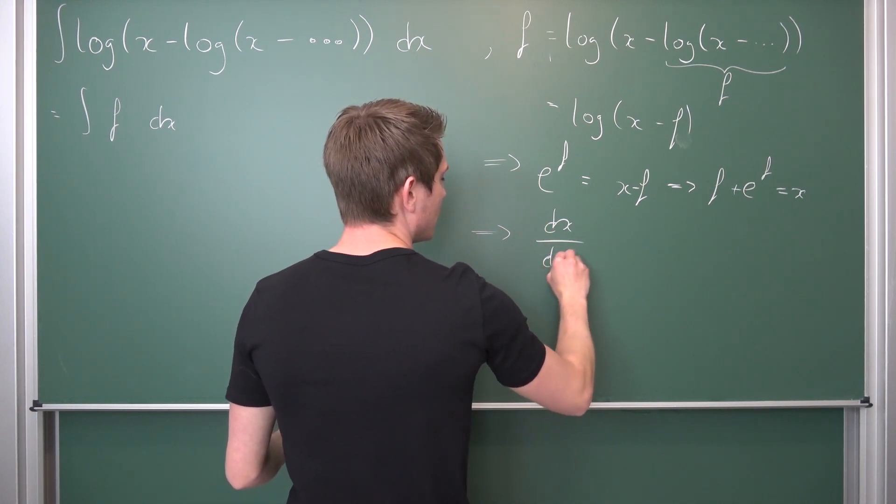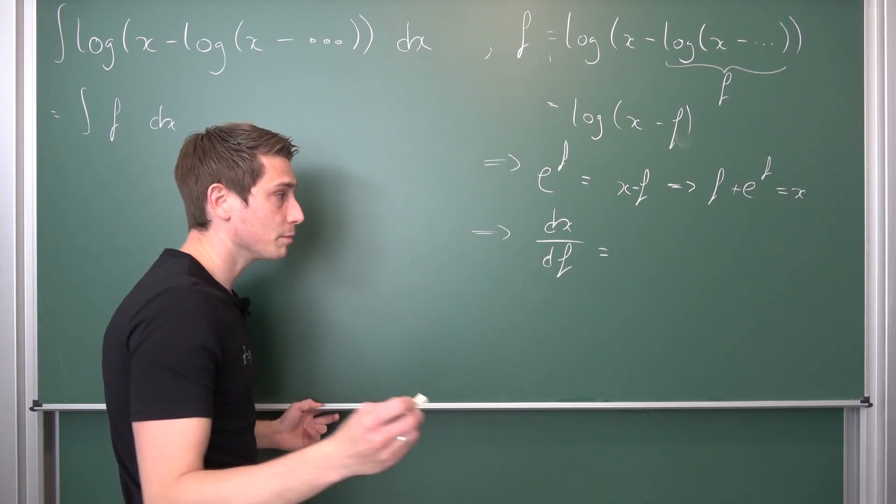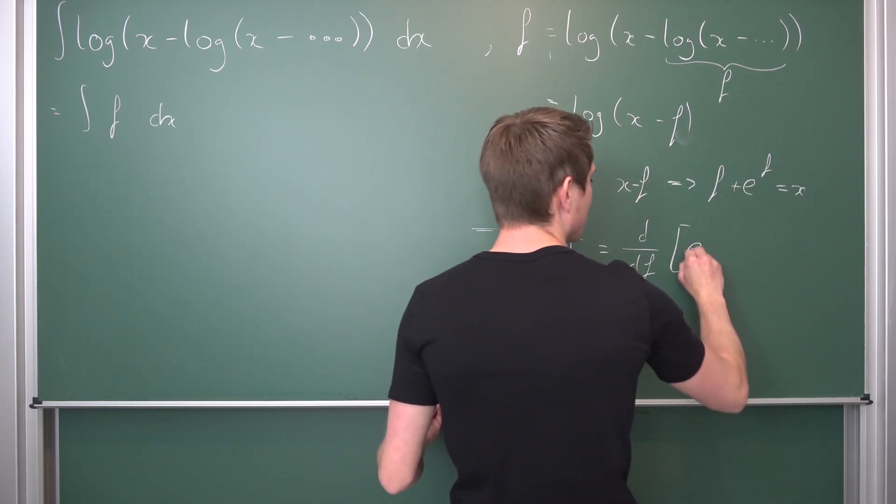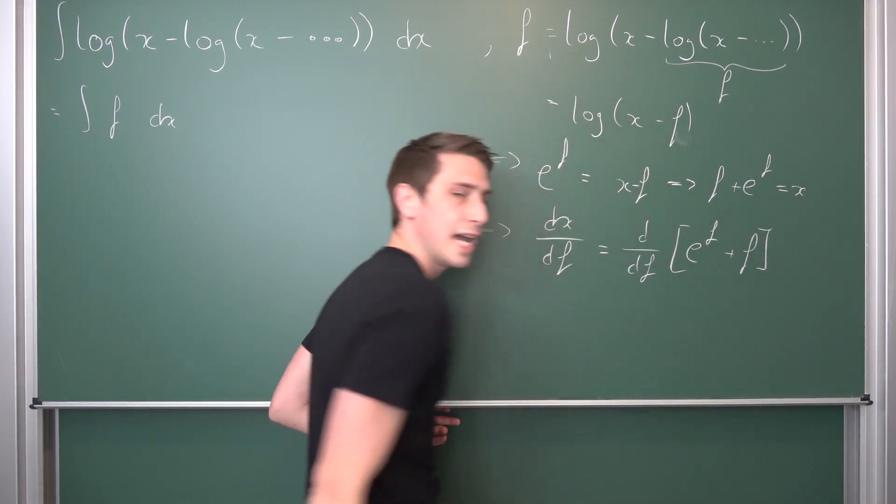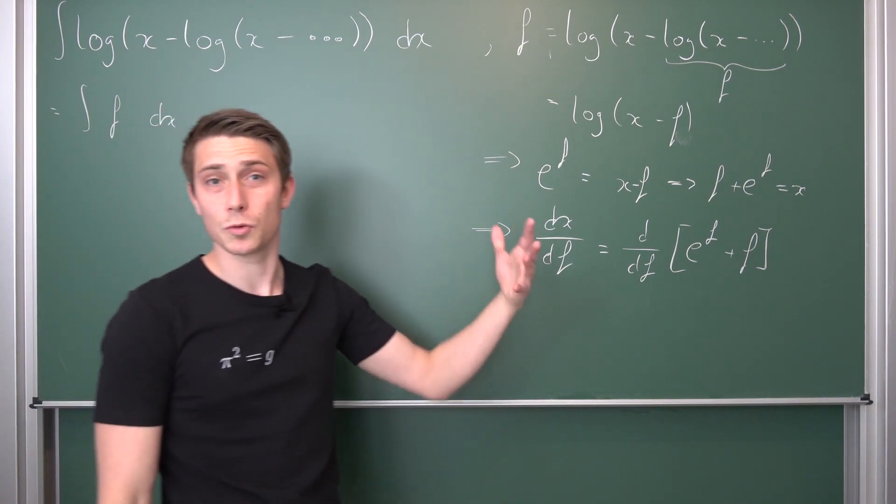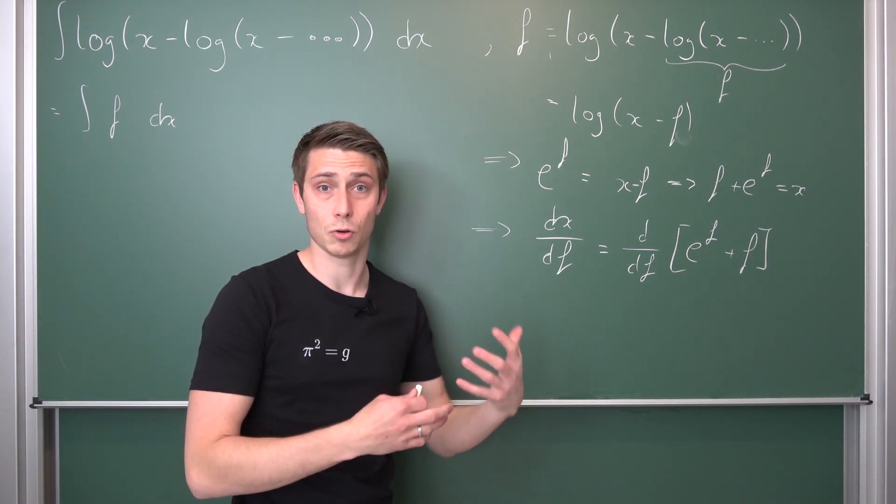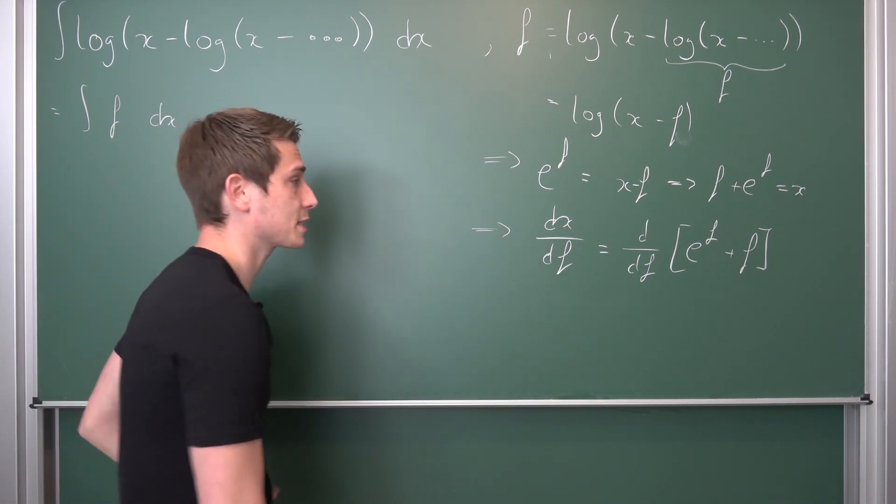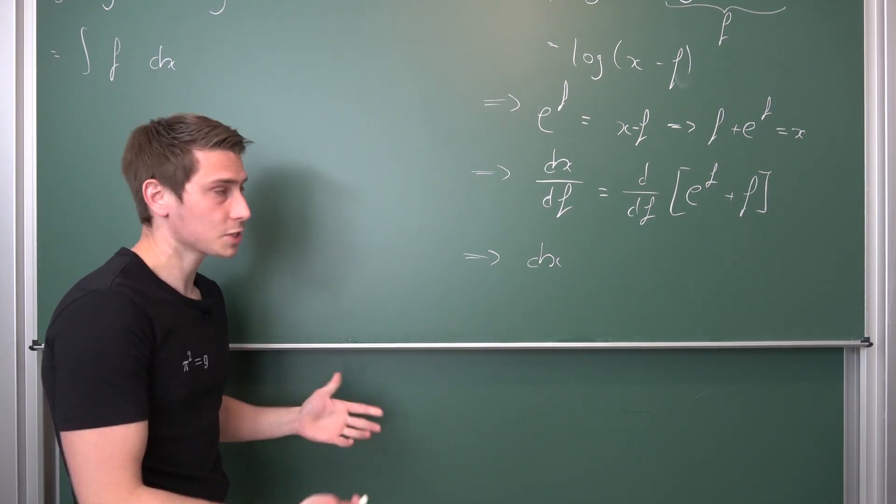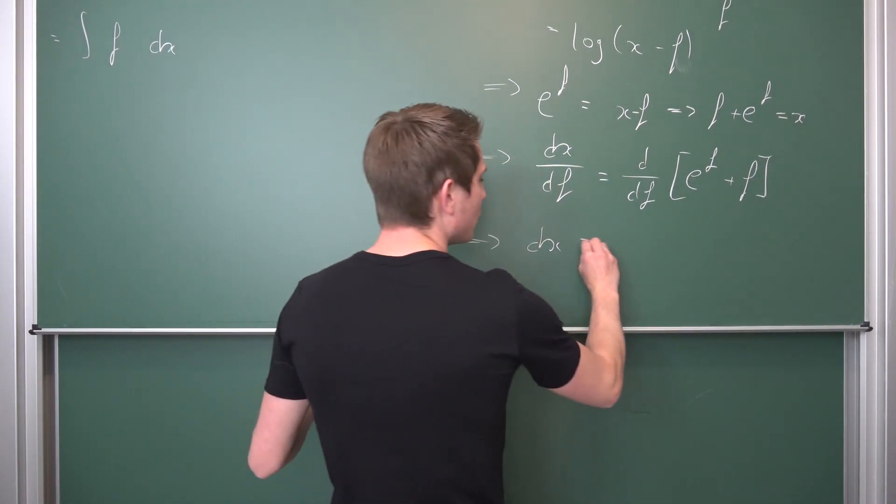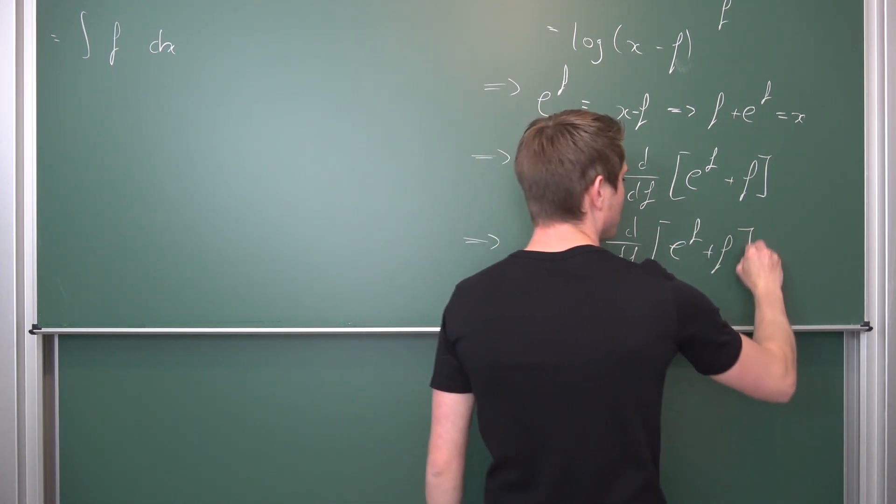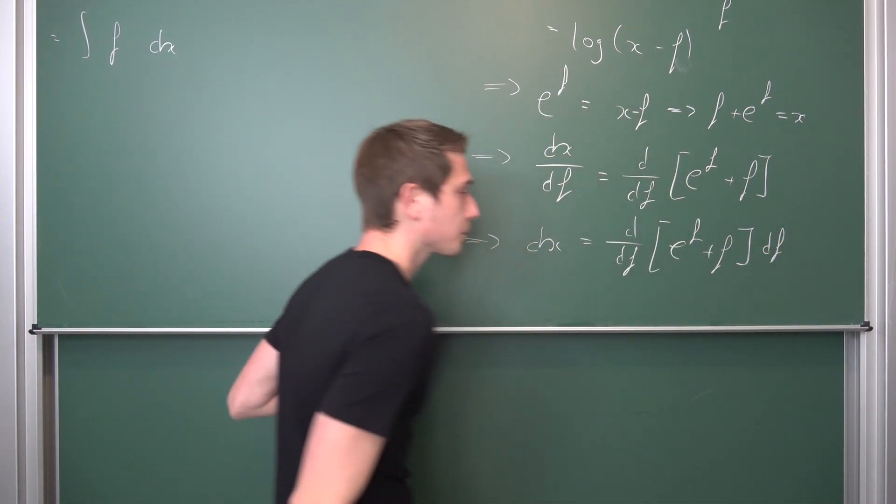So dx/df is nothing but d/df of e^f + f. We can apply the differential form df on both sides to solve for dx. This is how substitution works. We're going to end up with d/df(e^f + f) df.